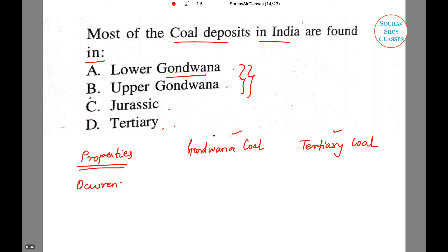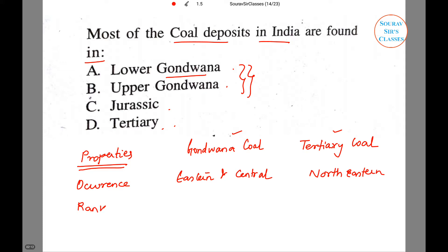First, based on occurrence: Gondwana coal is mainly found in the eastern and central part of peninsular India, while tertiary coal is found in northeastern India.